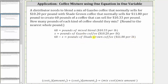Again, the total amount of the mixed blend — 60 pounds minus x, the pounds of gazebo coffee — must give us the number of pounds of shade-grown coffee. From here we can write an equation: the cost of the first coffee times the amount plus the cost of the second coffee times the amount must equal the mixed cost times the mixed amount.